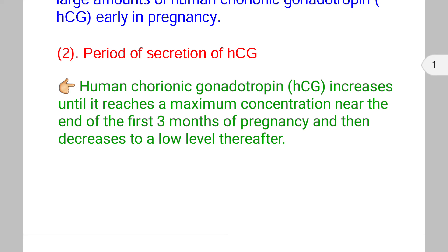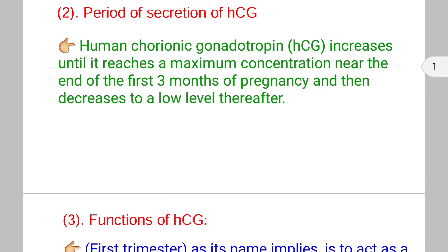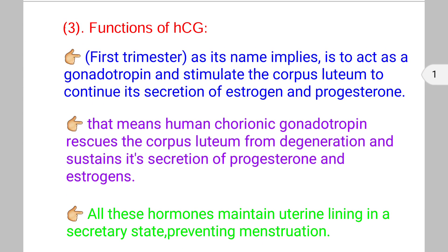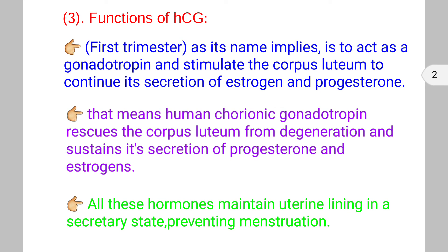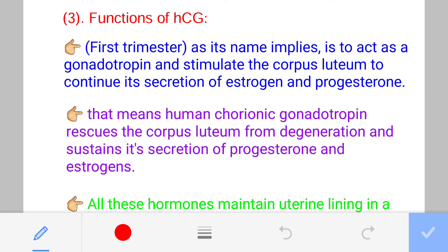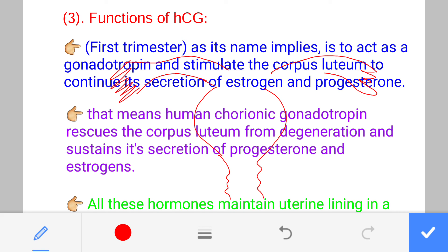To summarize: the HCG secretion was at its peak during the first three months and is secreted by the placenta. Now let's understand the role of HCG. When implantation is done — here is the fallopian tube, the uterus, and the vagina — fertilization occurs, then cleavage, then the blastocyst stage. The blastocyst comes into the uterine cavity and implants.